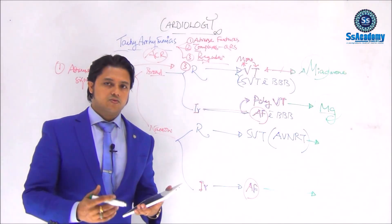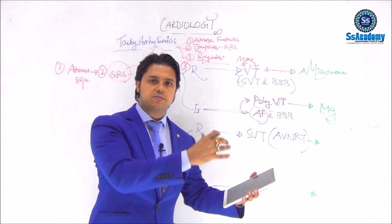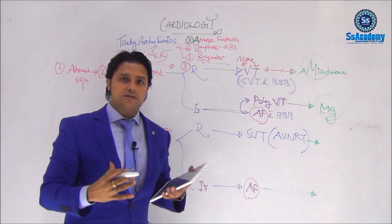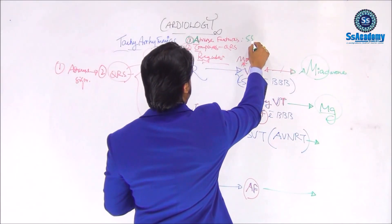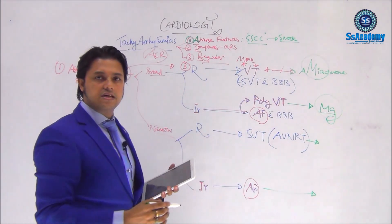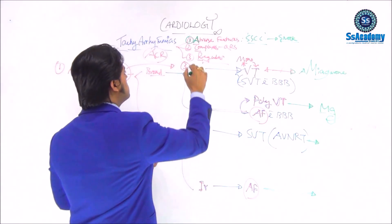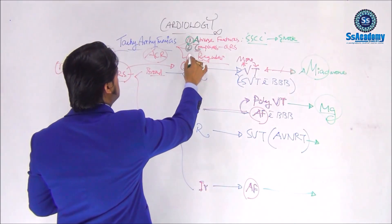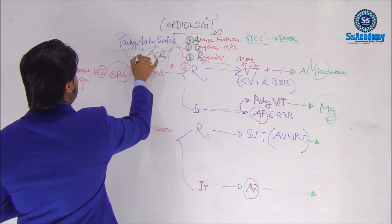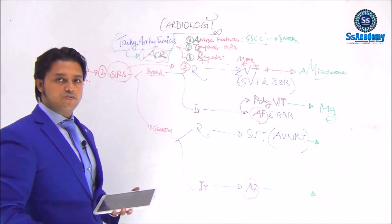In summary: whenever you encounter tachyarrhythmia, first consider adverse features — if any one of the SSCC features is present, the patient is unstable and should receive DC shock. If stable, think about the complexes (broad or narrow), then think about regular or irregular rhythm. The ACR mnemonic — Adverse features, Complexes, Rhythm — is helpful to detect all complexes and arrive at your diagnosis. We'll discuss more in the next lecture.